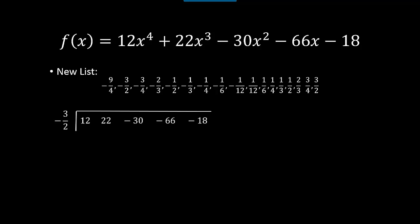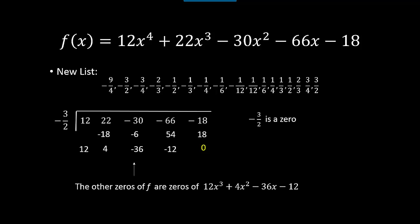Now I have a shorter list to try. Let's try −3/2. Synthetic division gives a remainder of 0 — negative three-halves is a zero! Once you find a zero in a degree-4 polynomial, the remaining three zeros come from the quotient polynomial, which in this case is 12x³ + 4x² − 36x − 12. So I'll continue my search using this quotient rather than starting over with f(x).